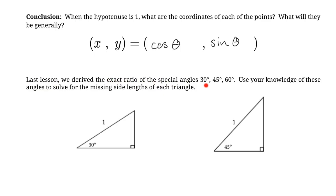We've already learned the exact ratios for the special angles — 30°, 45°, and 60°. So if we have a 30° angle on the unit circle with hypotenuse 1, the bottom side equals our x-coordinate, which is cos(30°) = √3/2. The vertical side equals our y-coordinate, which is sin(30°) = 1/2. Those are the two side lengths for the 30° triangle.